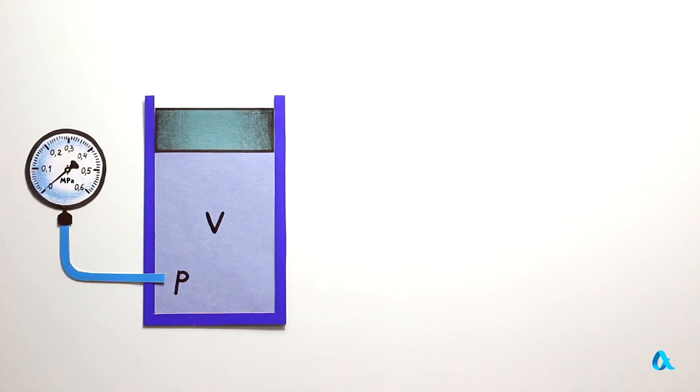Let us consider gas contained in a vessel with a displaceable piston. Its state is characterized by the three main parameters: pressure, volume, and temperature. The dependence of two values at a fixed third one provides us with three gas laws.